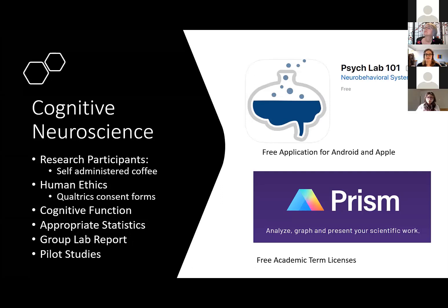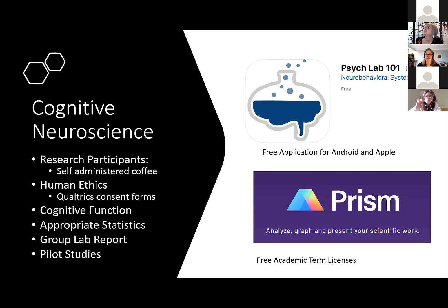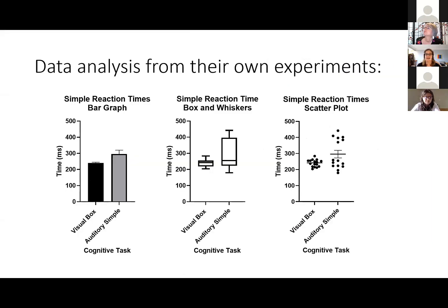Our first section is cognitive neuroscience, and we actually have the students be research participants. Normally they have a randomly assigned drink to consume; this time they self-administered their own coffee for caffeine to see how that affects reaction times. We switched our ethics forms from paper to Qualtrics to get consent, and they were able to assess their own cognitive function with a free app called PsychLab 101, then analyze the data using GraphPad Prism, which we get free academic term licenses for. They were able to produce a group lab report, conduct some pilot studies, and remotely collect and start thinking about the data.